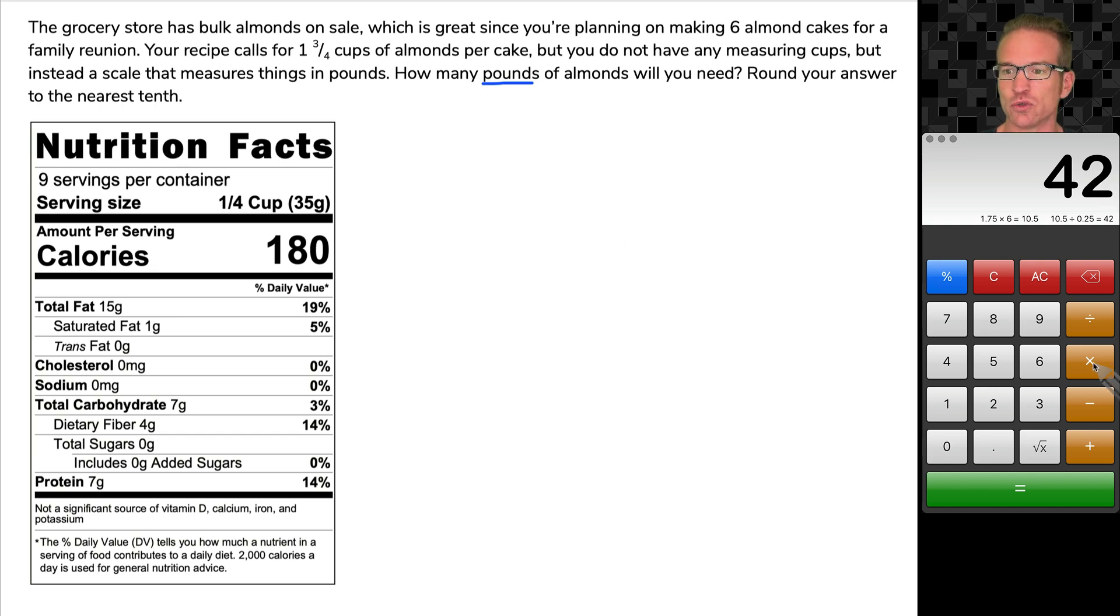We need 42 times 35 grams. So that's what I'm going to do. 42 times 35 grams. That's 1,470 grams. But we need pounds.